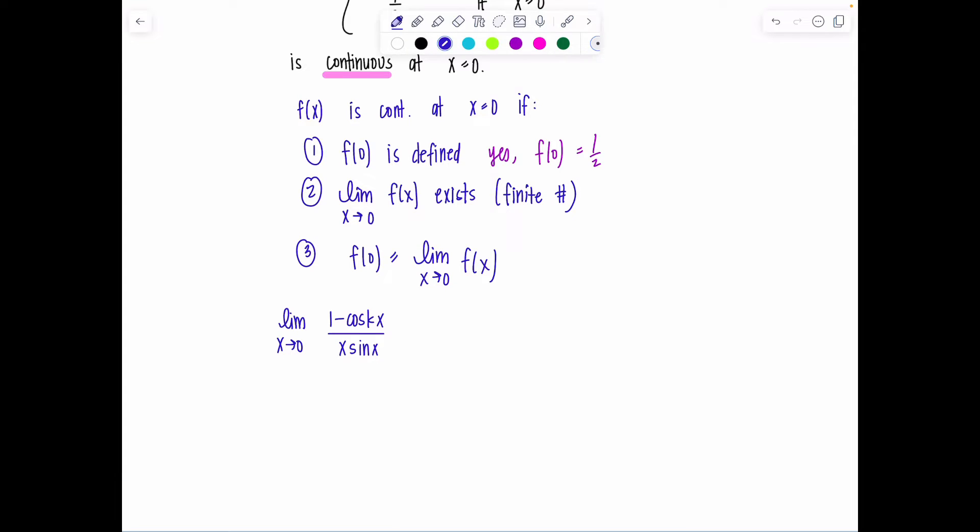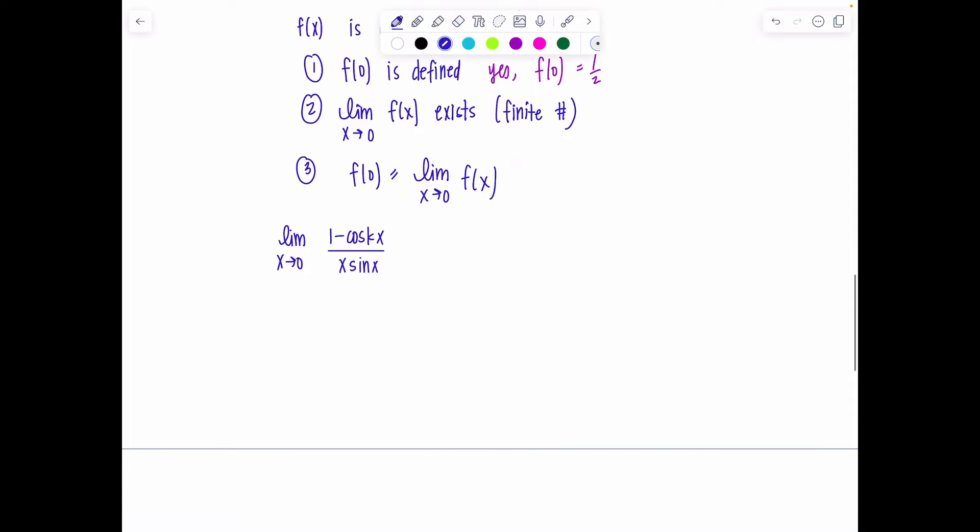We have two different limit rules or formulas that we can apply. The limit as theta approaches 0 of sin(theta)/theta equals 1. Also, you can take the reciprocal. This is the same as the limit as theta approaches 0 of theta/sin(theta).